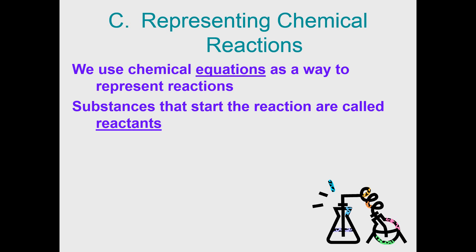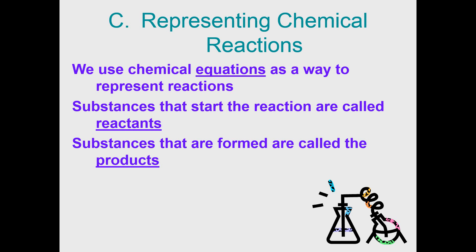We use chemical equations to represent reactions. Chemical equations are a lot like mathematical equations — they use plus signs, arrows, and chemical formulas to abbreviate what's happening in a chemical reaction. We have substances called reactants and substances called products, and you definitely need to know those terms.